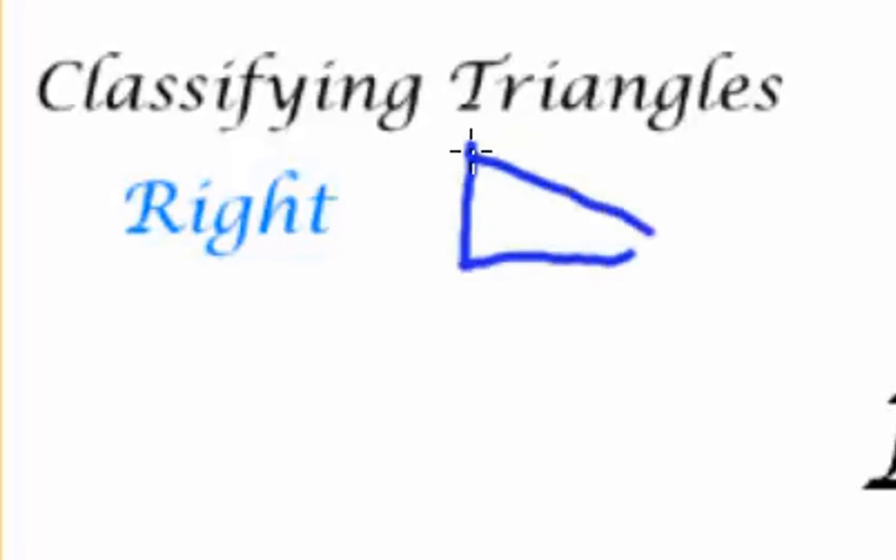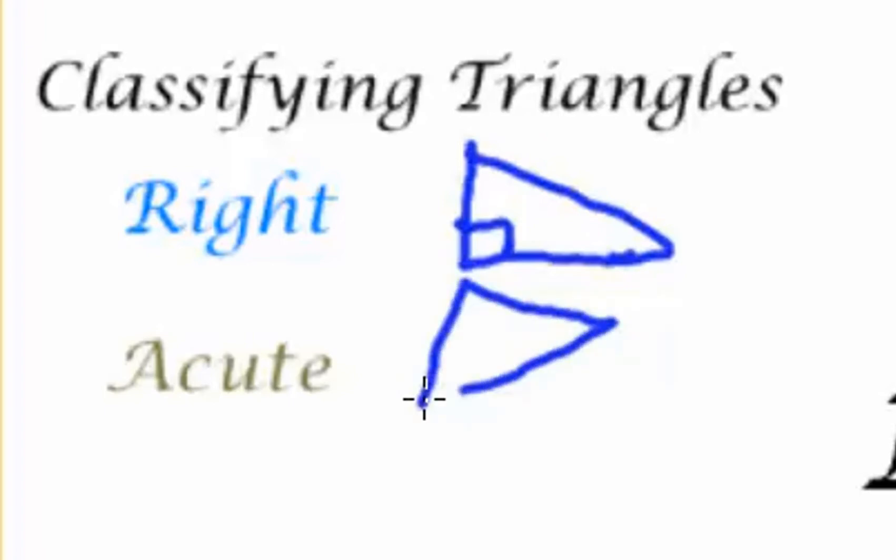I could have an acute triangle where all three of the angles are acute, which means they are all less than 90. And I can have an obtuse triangle. A triangle where one of my angles is obtuse more than 90. And the other two of course have to be acute from there.